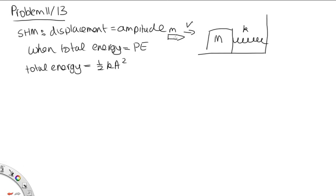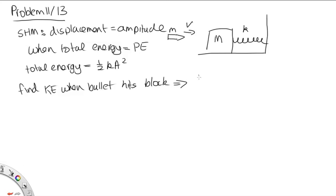We can assume that when the bullet hits the block and gives it momentum, at that point in time it's going to have its maximum velocity. So all its energy is going to be in the form of kinetic energy, and so the total energy will be the kinetic energy at that point. If we can find the kinetic energy when the bullet hits the block, this will be the total energy, as there's no energy stored in the spring at that time.